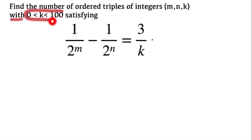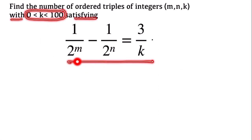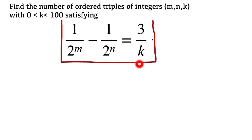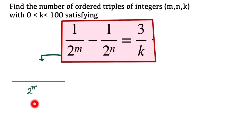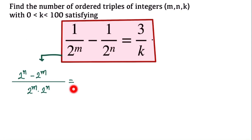The equation is: 1/2^m minus 1/2^n equals 3/k. First, we break this equation by taking the LCM of 2^m and 2^n. The LCM gives us (2^n minus 2^m) over 2^(m+n), and this equals 3/k.